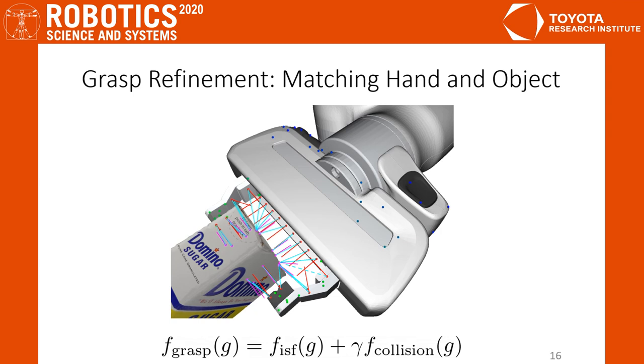Selecting a goal from a fixed grasp set can be limited, so we propose to refine the chosen grasp. The objective for the configuration space grasp refinement is a combination of iterative surface fitting and hand collision costs.